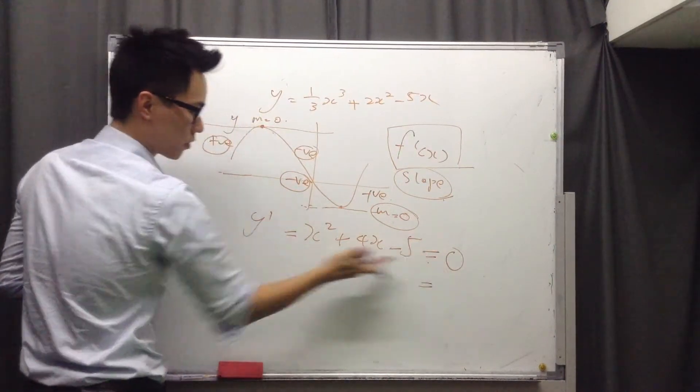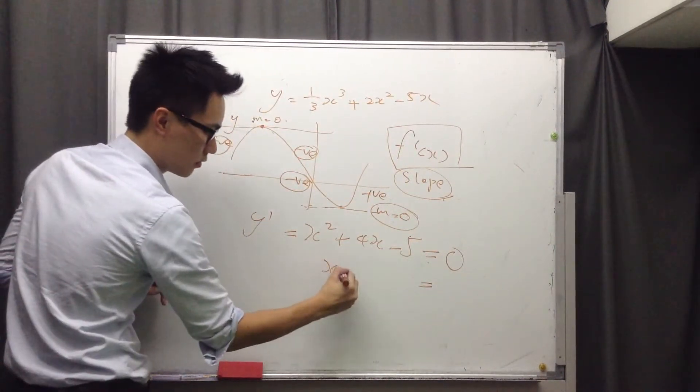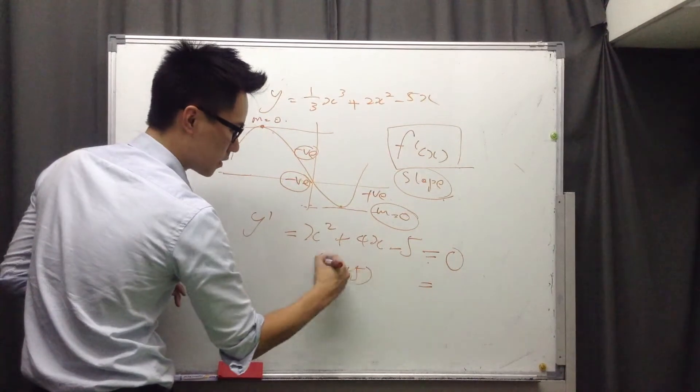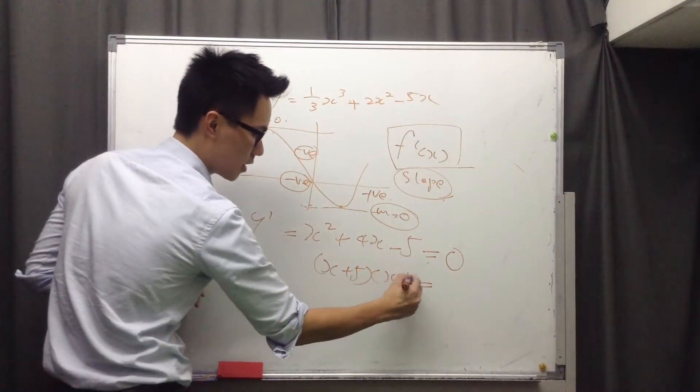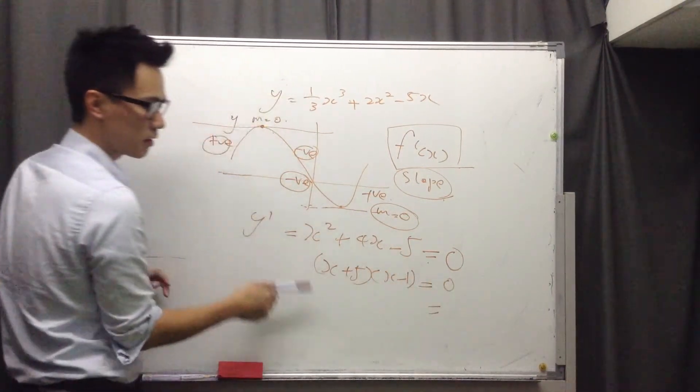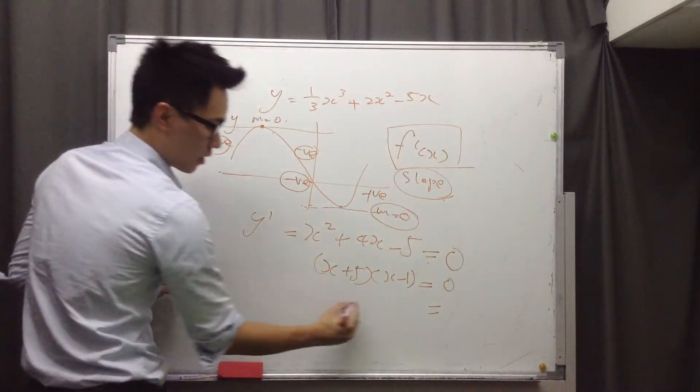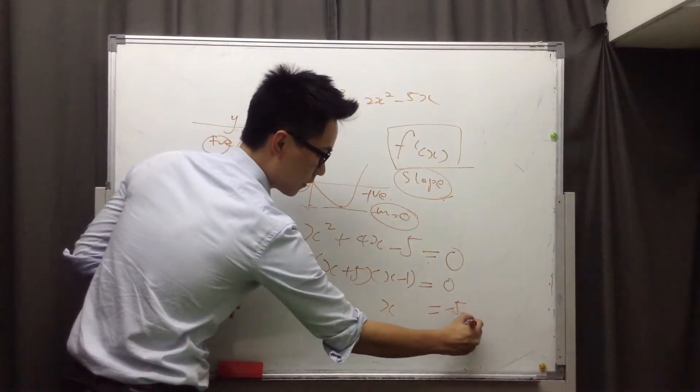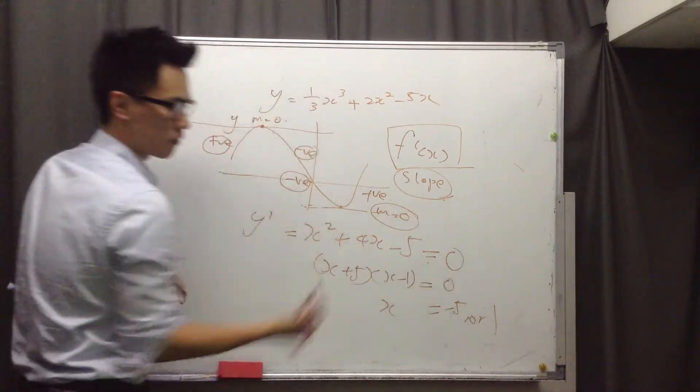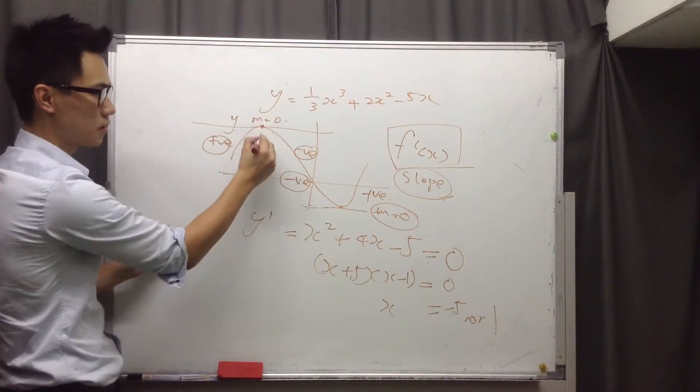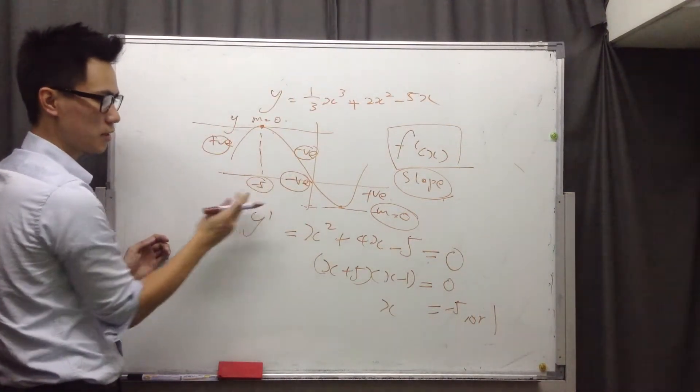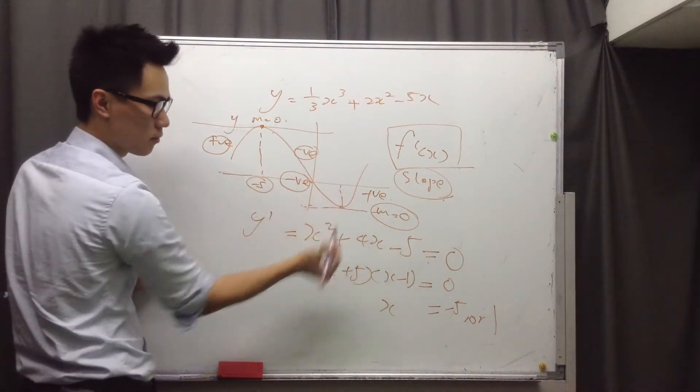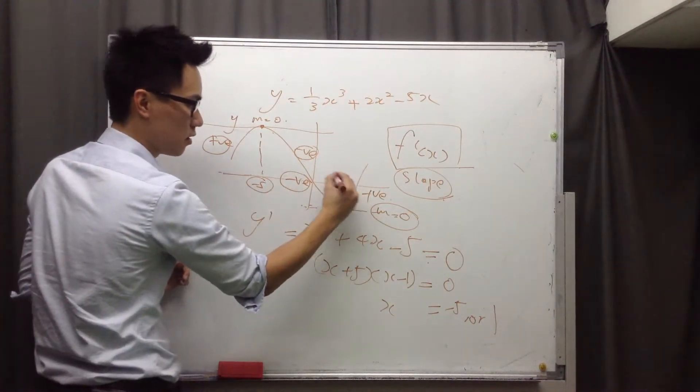So, equal zero, the slope here. And you have x plus 5, x minus 1, equals zero. The cross method. And x equals negative 5, or 1. So it means the point here must be x equals negative 5, and the point here, x must be equal to 1.